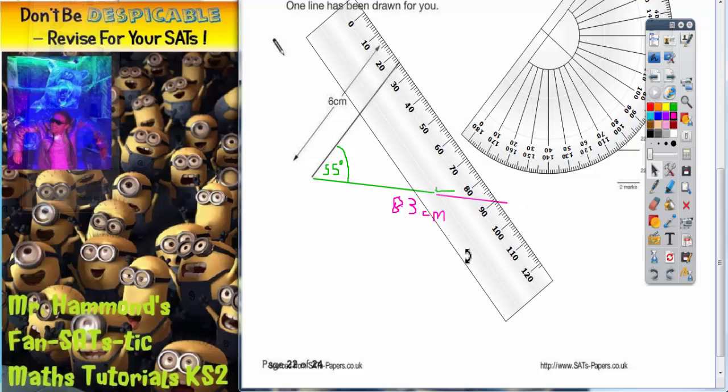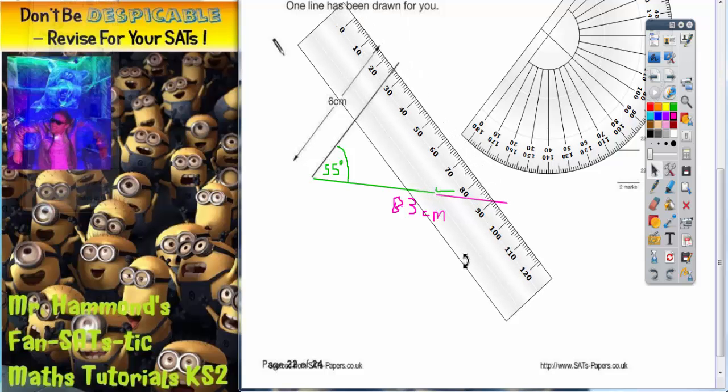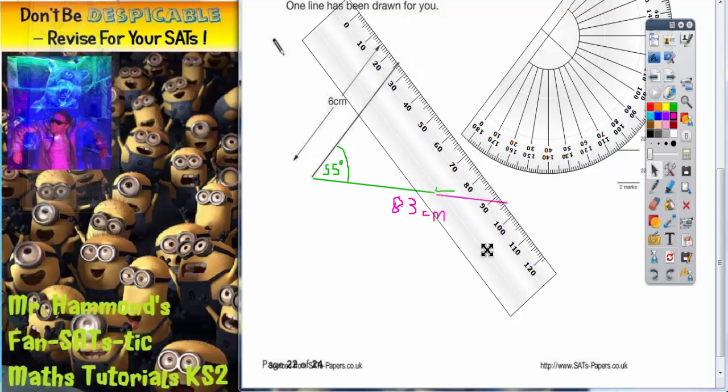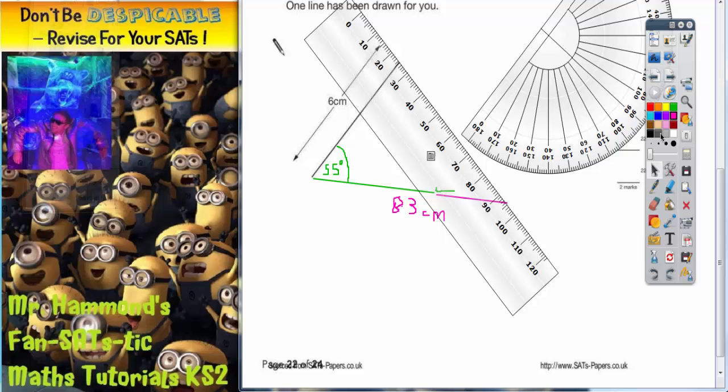So that's almost right. There we go. So get your two lines on, join it up, and that will be your completed triangle.